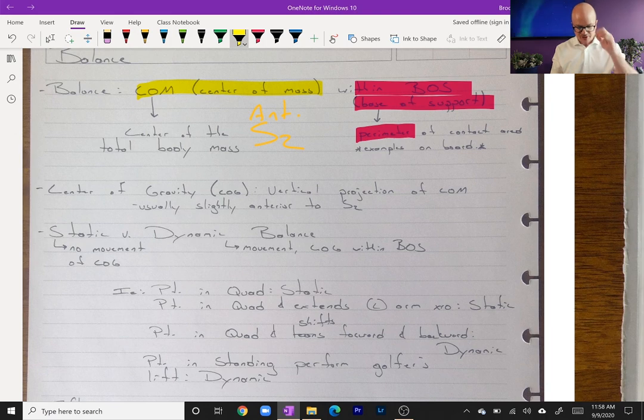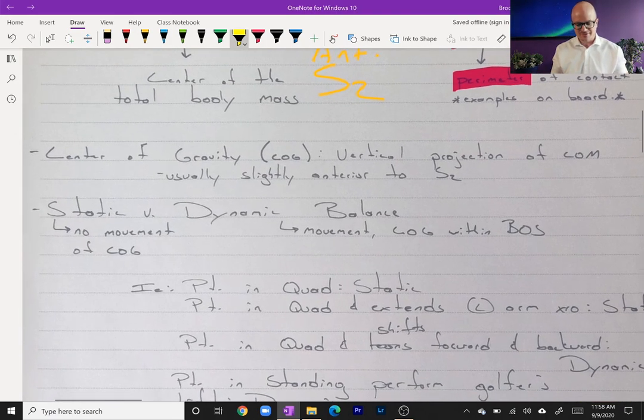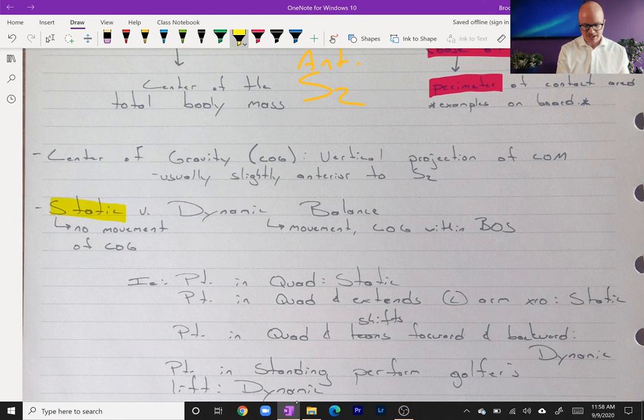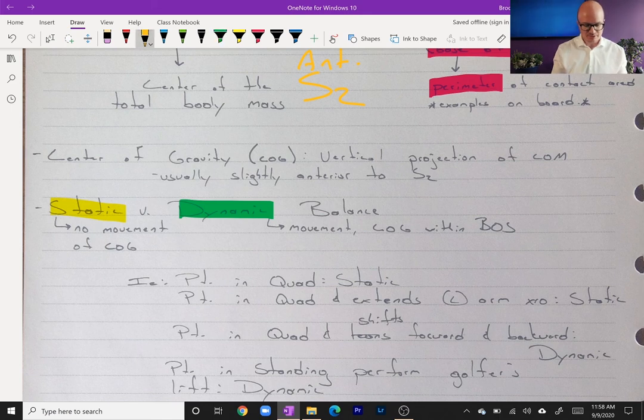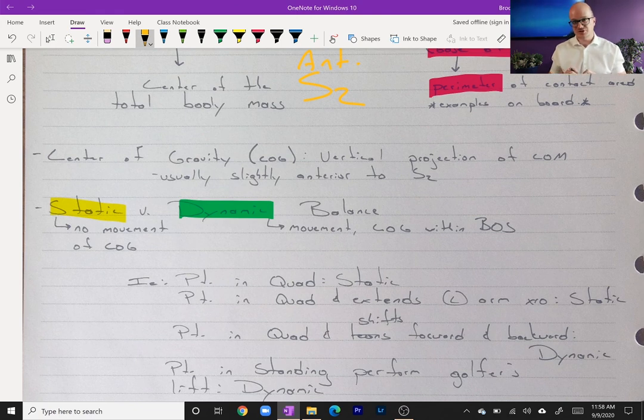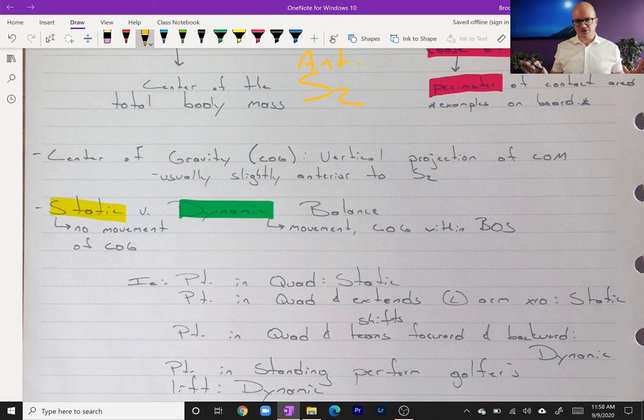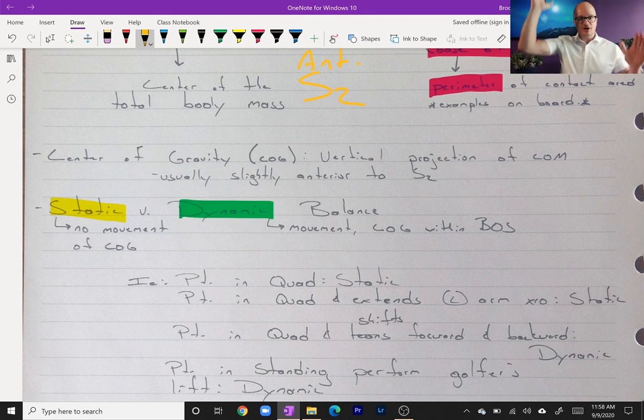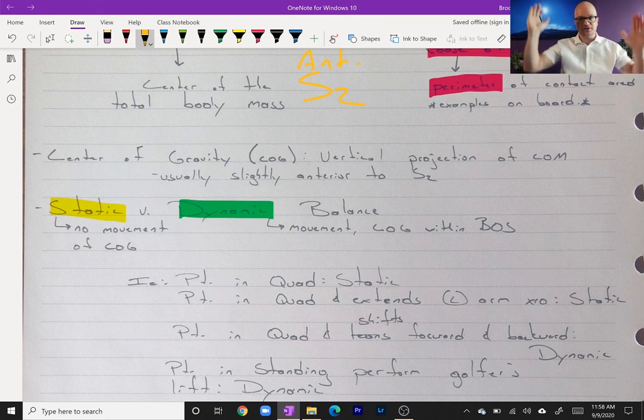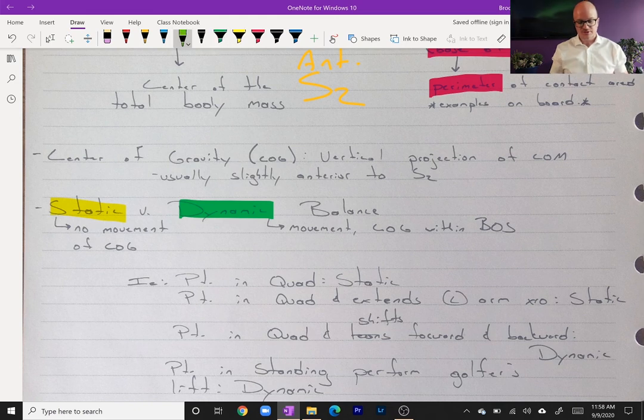So we have our two parameters to make our definition. Now we have two types of balance. We have static balance and we have dynamic balance. Static balance, simply put, no movement. The center of gravity or center of mass—think of a golf ball sitting right in front of the S2—is not moving. If I sit perfectly stationary, and all of this is with the assumption that I'm not leaning on an armrest or leaning back in a chair, that's static. Now if I move my arms, is that still static balance? Absolutely, because my center of gravity is not moving. Pretty easy.